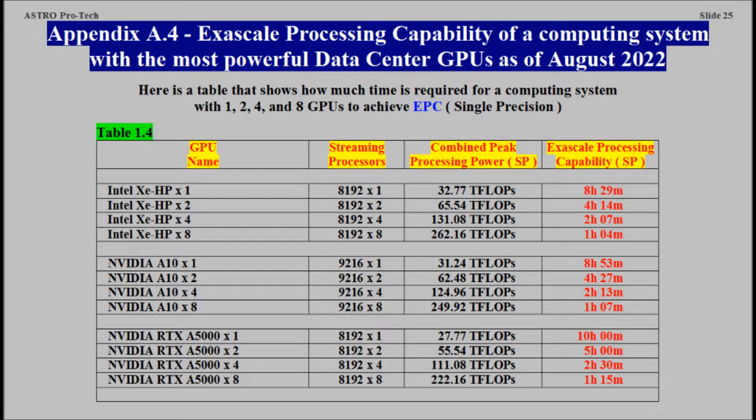Appendix A4. Exascale Processing Capability of a Computing System with the Most Powerful Data Center GPUs, as of August 2022.